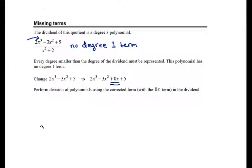So, I'm going to start this by putting my divisor on the outside. That's x squared plus 2. And, again, my dividend on the inside. That's 2x cubed minus 3x squared plus that 0x that we said was necessary plus 5.